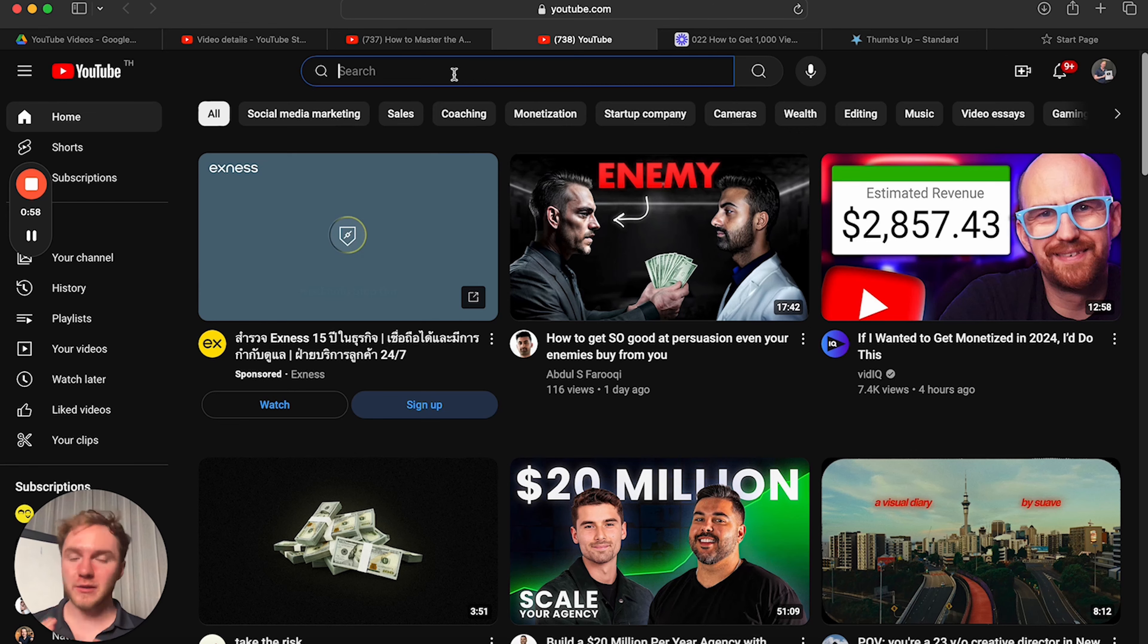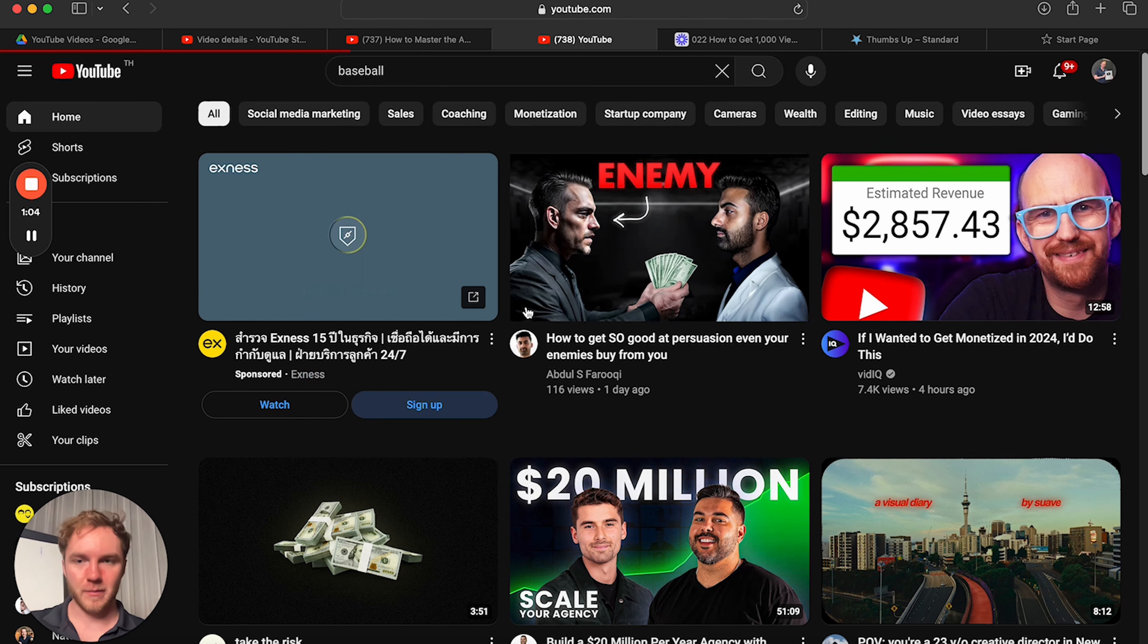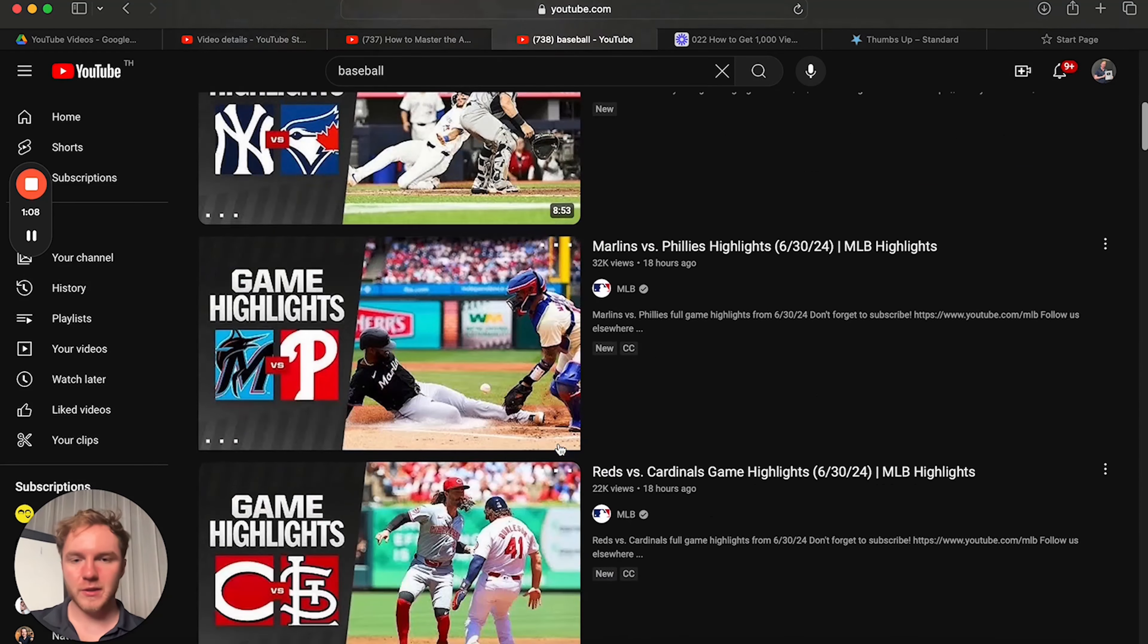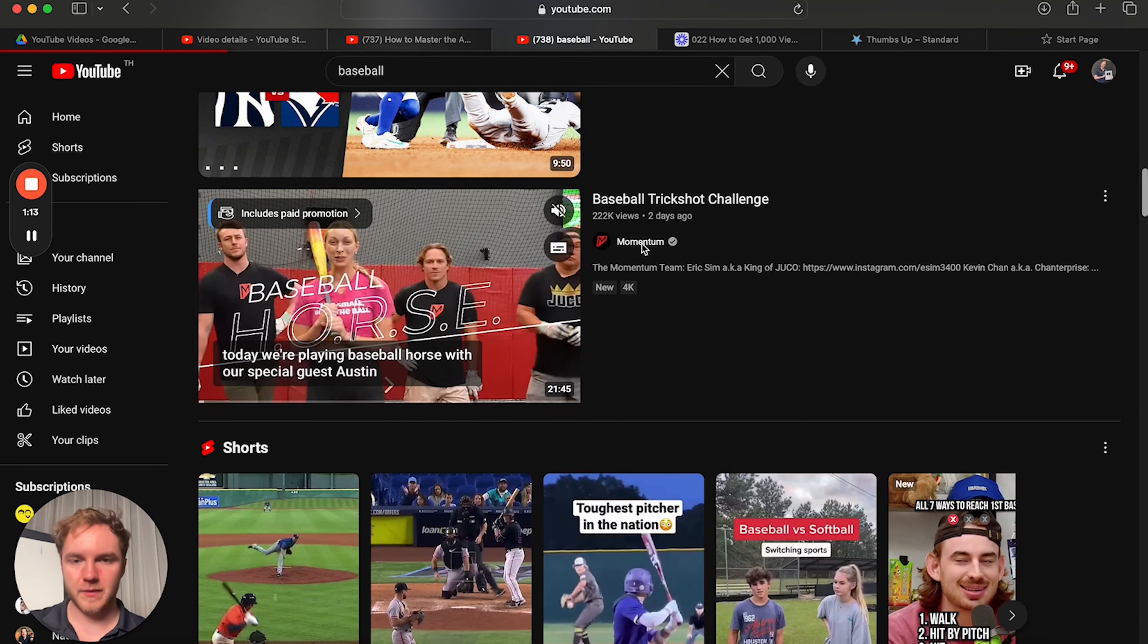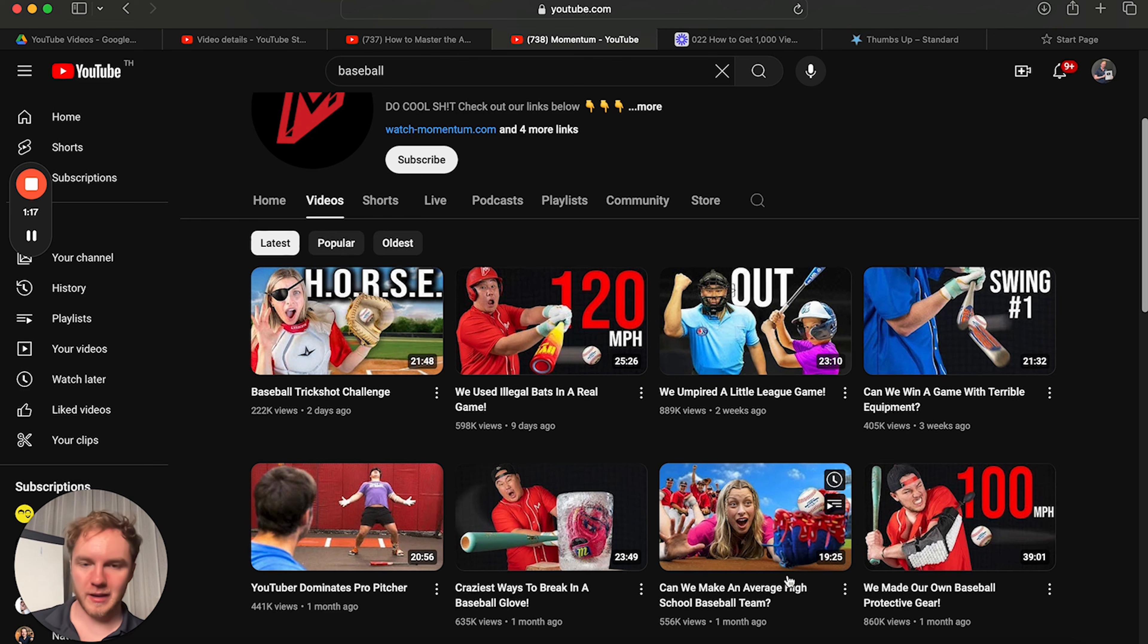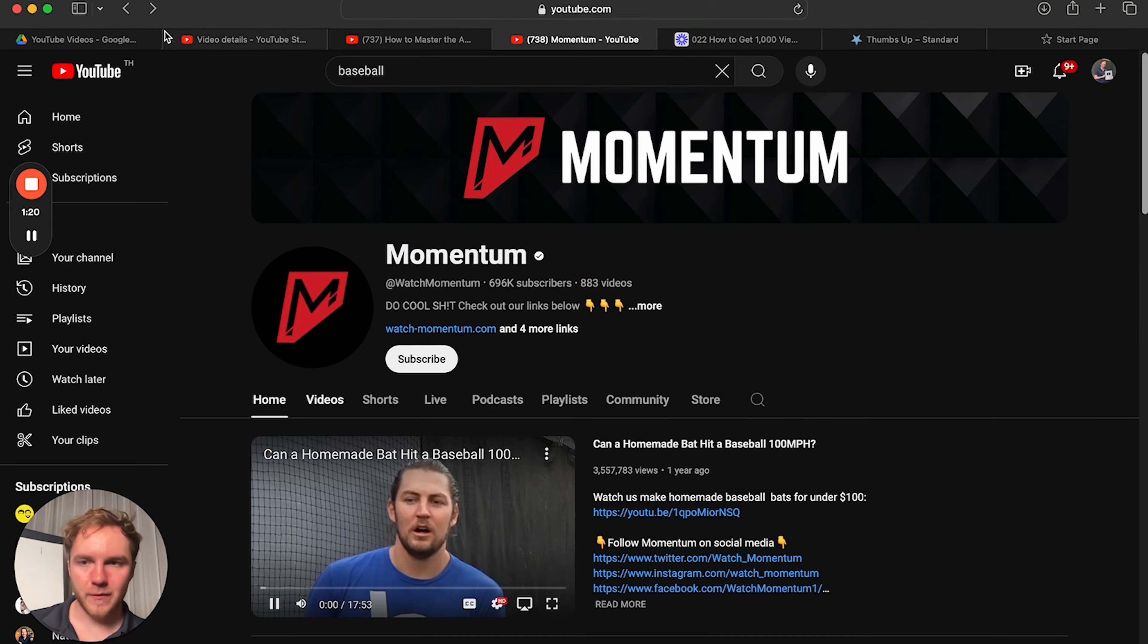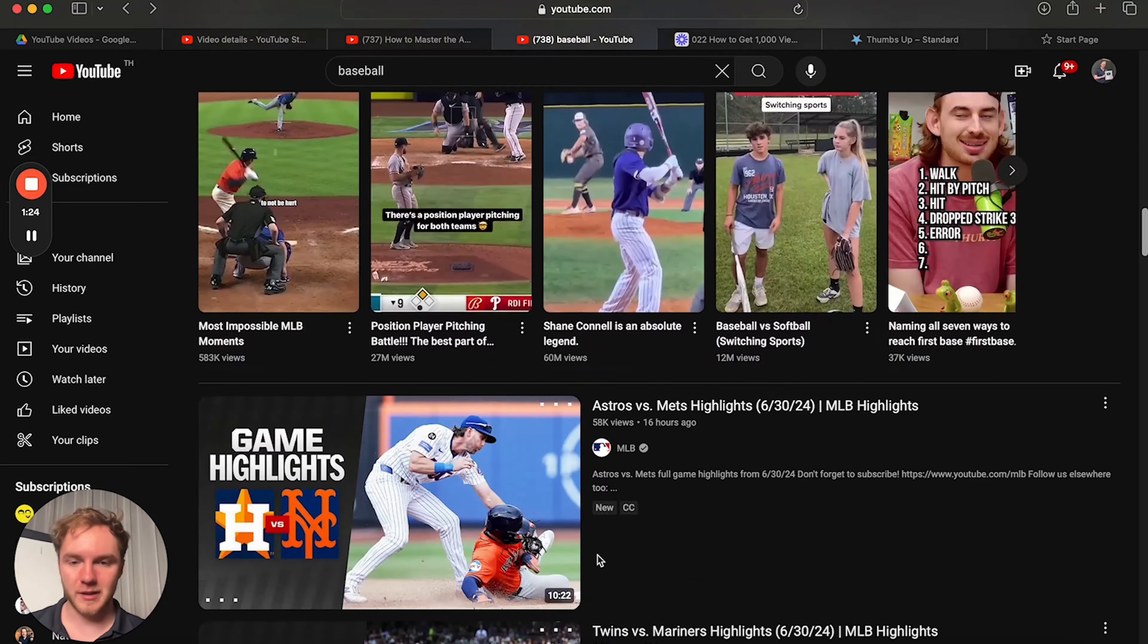The next step in finding whether this niche is right to pursue is simply taking a look at it on YouTube. We are going to look at the baseball niche for an example. So all you have to do is look up baseball on YouTube. So you go to baseball and scroll through and just see what kind of videos pop up. For example, Momentum, they have 200,000 views. They have a whole baseball channel getting a ton of views, right?